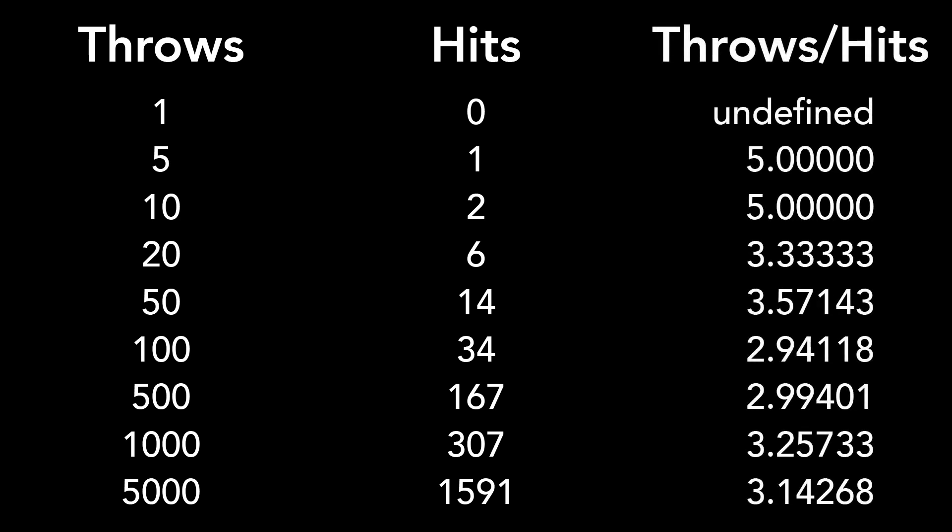Record how many times you threw the toothpick and how many times the toothpick crossed one of the lines. Divide the number of throws by the number of times a line was crossed. This number will get closer to the value of pi the more throws you do.